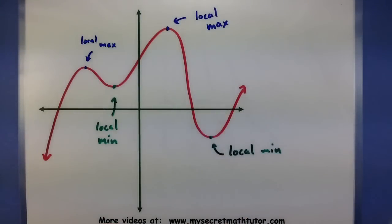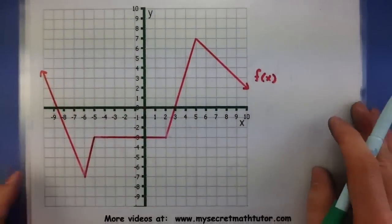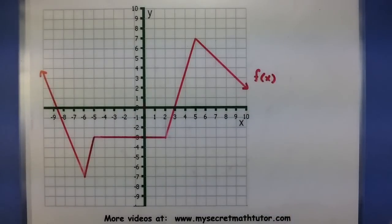Now to describe where these places happen, you basically describe the point at where it occurs. Let's do this with the following example. So I want to find all the local maximums and all the local minimums. Let's start with our local max.